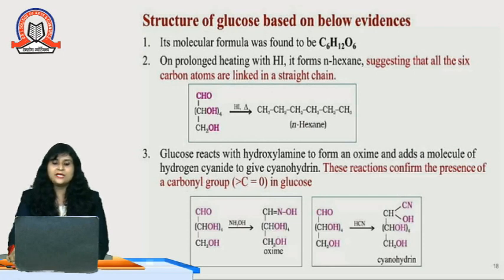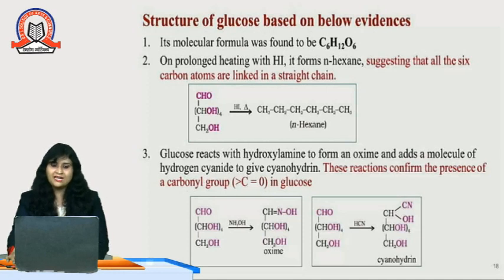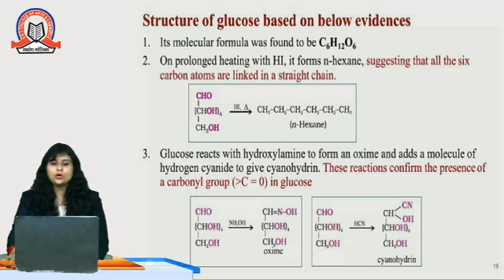The structure of glucose is based on the following evidences. Its molecular formula was found to be C6H12O6. On prolonged heating with HI, it forms n-hexane, suggesting that all 6 carbon atoms are linked in a straight chain. Glucose reacts with hydroxylamine to form an oxime and adds a molecule of hydrogen cyanide to give cyanohydrin. These reactions confirm the presence of a carbonyl group in glucose.